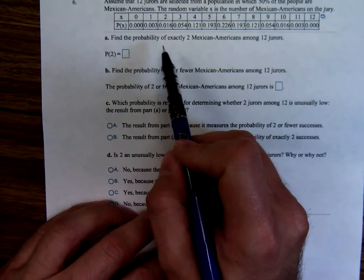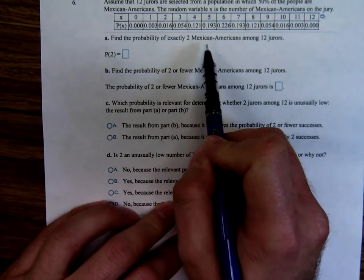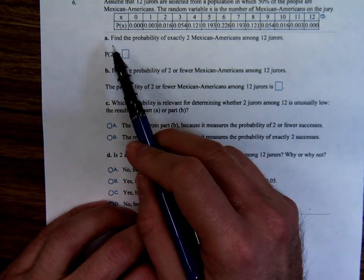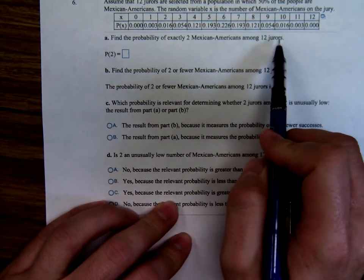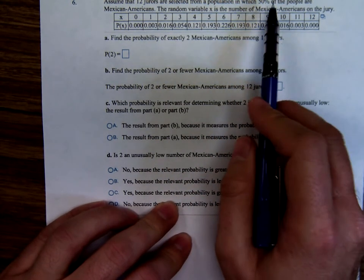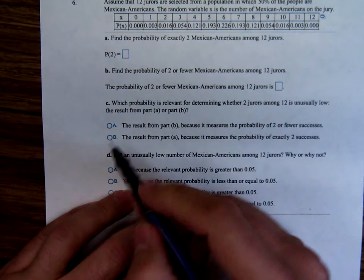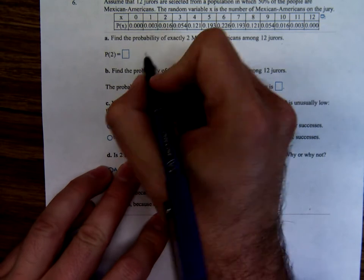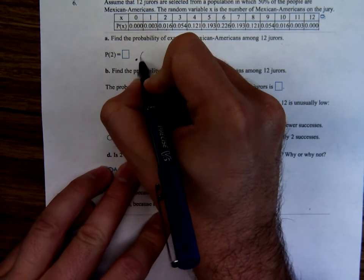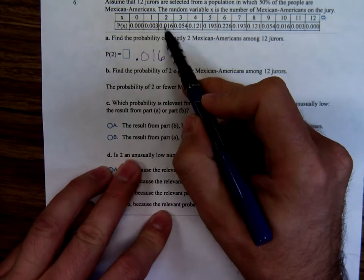Find the probability that exactly two Mexican Americans, find the probability of exactly two Mexican Americans among 12 jurors. Well, half the people are Mexican Americans. The probability of only two of the 12 people being Mexican Americans should be pretty small. And it is. It's point zero one six.